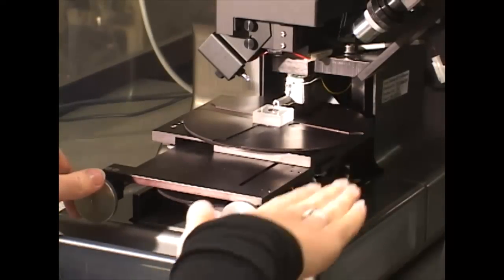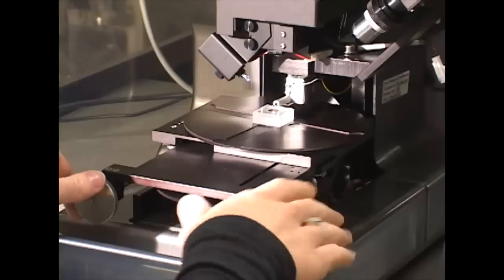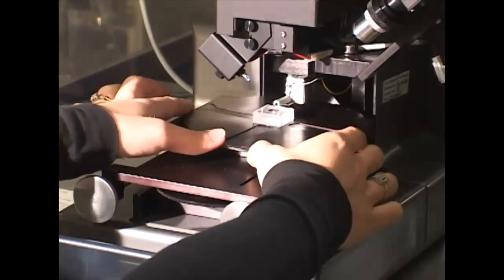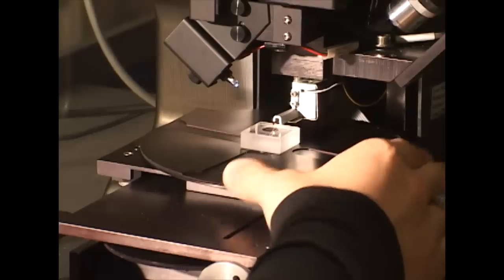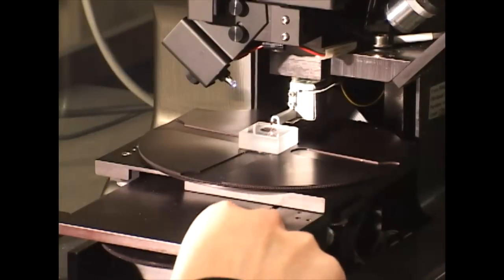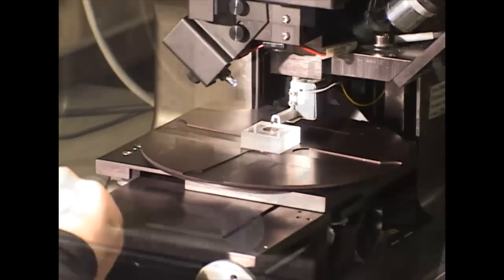These two knobs move the stage back and forth, front to back. And then this dial actually rotates the stage in a circle. So we'll rotate the sample, get it in correct position for the measurement. We'll close the chamber and go back to the program.